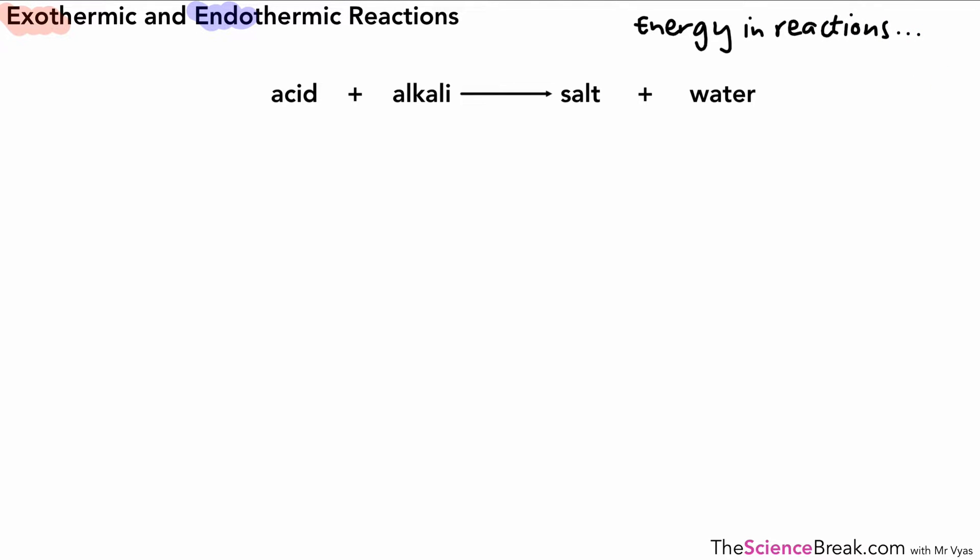Now if you imagine that we have an acid and an alkali which react together they make salt and water and we've looked at that in a previous video. We call that reaction a neutralization reaction and this is actually an example of a reaction that gives out heat energy.